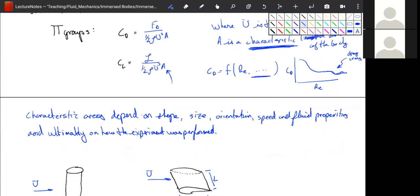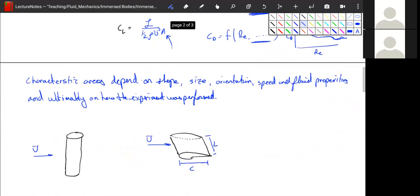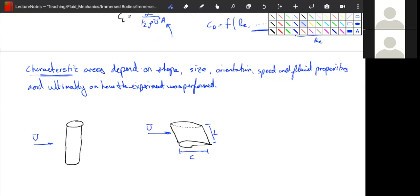But the hard part is you have to match this area and match all of these other pi groups. So let's talk about first what this area is. So these characteristic areas depend on the shape, size, orientation, speed, fluid properties, and ultimately how an experiment is performed. So really, whenever you look up a drag coefficient, you have to look up what characteristic area they use.